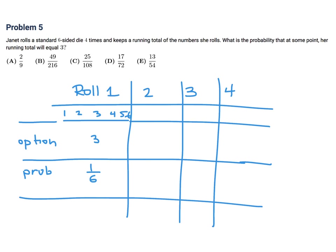On roll number 2, we want the running total to be 3. The only options are: first roll 1 and second roll 2, or first roll 2 and second roll 1. That gives a running total of 3 — so there are 2 possibilities. The total possibilities are 6 times 6, because you have 6 choices for each roll. So this is 2 over 36. For the third roll, the only way to have a running total of 3 is rolling 1 on the first, 1 on the second, and 1 on the third — that's just 1 way. But we have 6 to the power of 3 total outcomes.